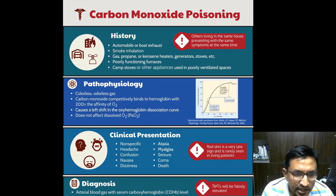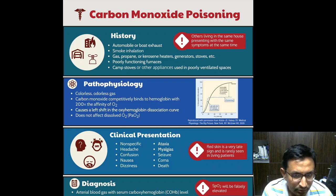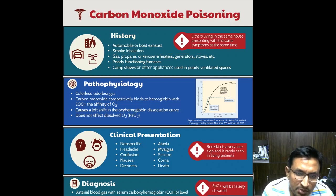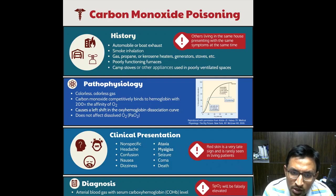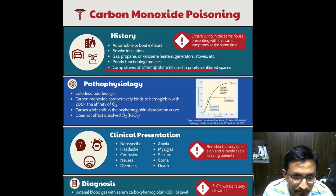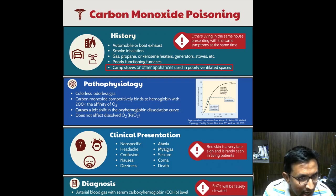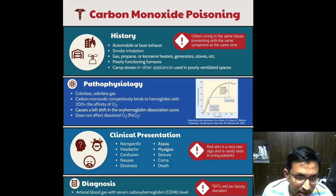Carbon monoxide is produced by the incomplete combustion of various fuels including gas, wood, propane, and kerosene. Common sources of carbon monoxide exposure include automobile or boat exhaust, smoke from fires, and household appliances like gas heaters that are not functioning properly. This gas can be especially hazardous in enclosed or poorly ventilated spaces.